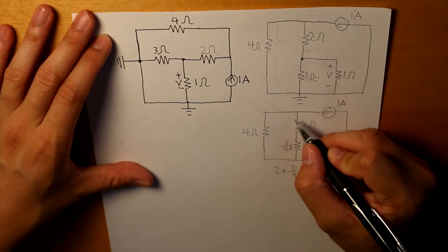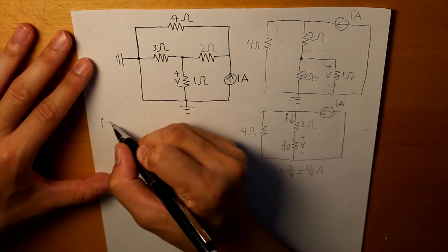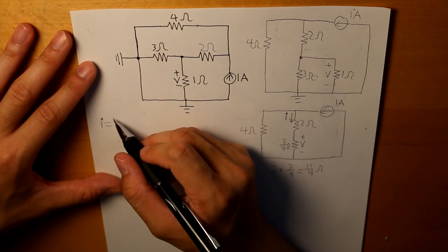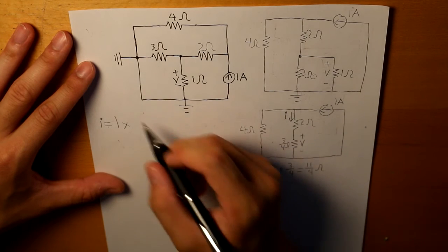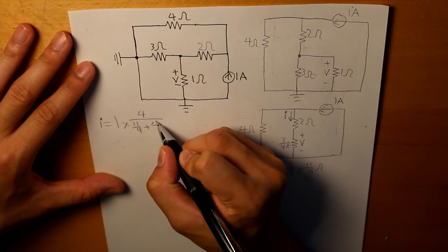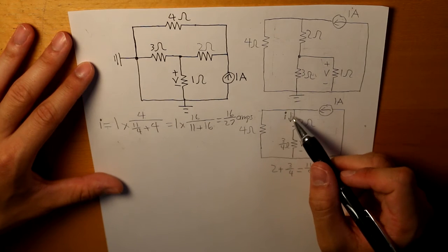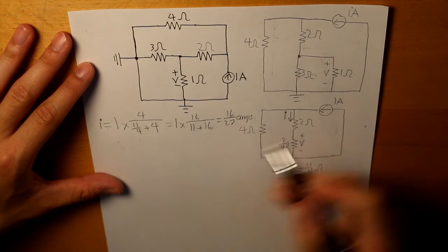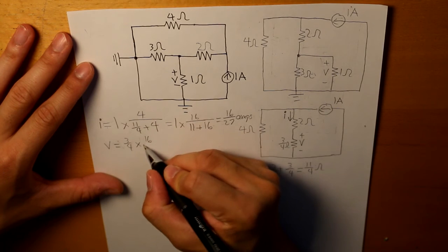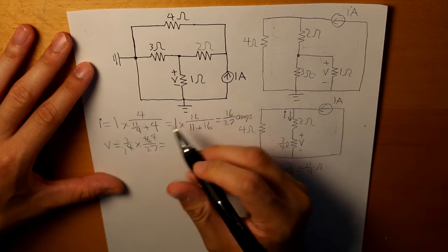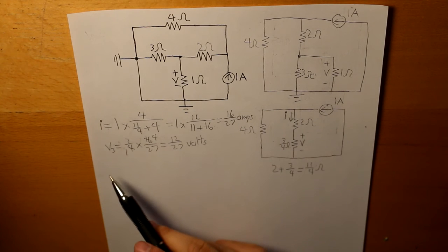With the series equivalent of 11/4 ohms, we use current division with the 4-ohm resistor and the 1-amp current source. The current i equals 1 amp times 4 divided by (11/4 plus 4), giving 16/27 amps. The voltage V3 is then 3/4 ohms times 16/27, which equals 12/27 volts.